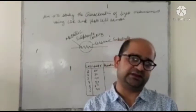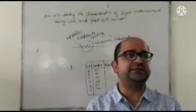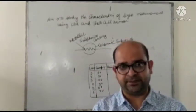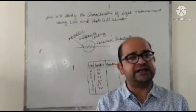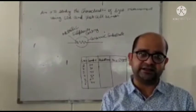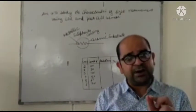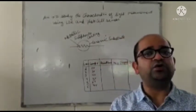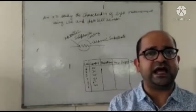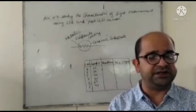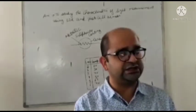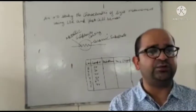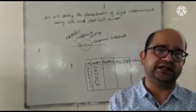LDR is a light dependent resistor. Light dependent resistor means that with the variation of light, the amount of resistance also varies. When we increase the intensity of light falling on the LDR, we have less resistance. And when the amount of light intensity decreases, the resistance increases. So light intensity and resistance are inversely proportional to each other — when one increases, the other decreases automatically.